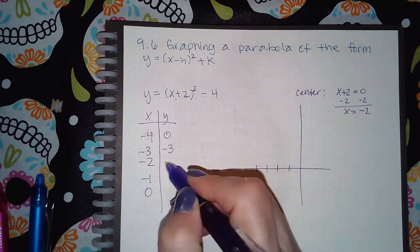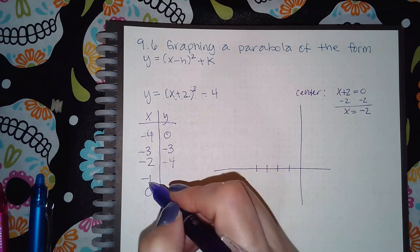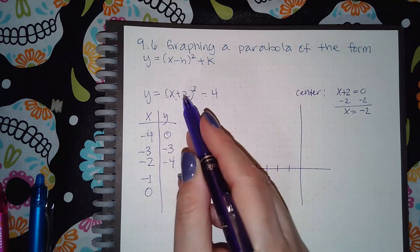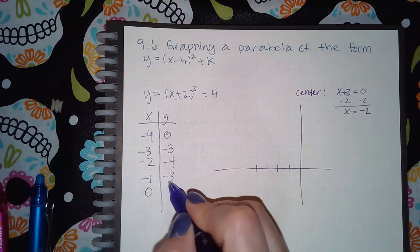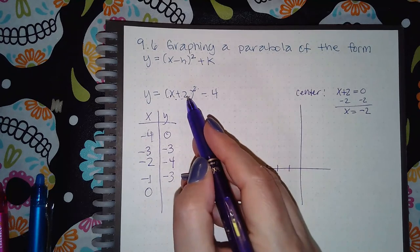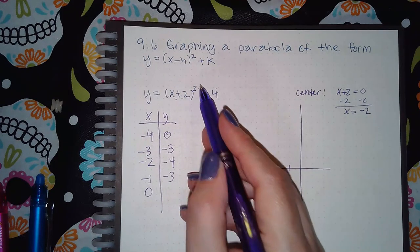Negative 1 is going to be positive 1 here, squared is positive 1 minus 4 is negative 3. 0 plus 2 is 2, 2 squared is 4, 4 minus 4 is 0.